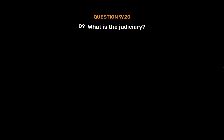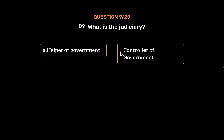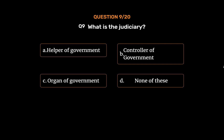Question No. 9. What is the judiciary? Option A: Helper of government. Option B: Controller of government. Option C: Organ of government. Option D: None of these. The correct answer is Option C: Organ of government.